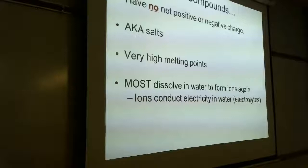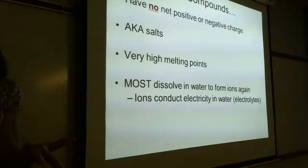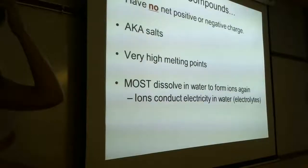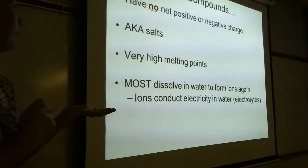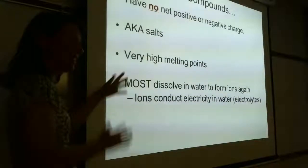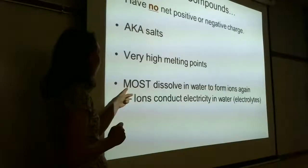Properties of ionic compounds: they have no charge. An ionic compound has no net charge — a single ion has a charge, but once combined in an ionic bond, the substance has no charge. Think of NaCl — there are no plus or minus signs in the formula. Ionic compounds are also known as salts. Technically, any ionic compound is called a salt — it's a very broad umbrella term.